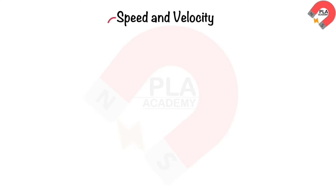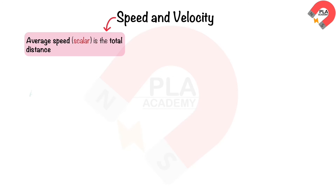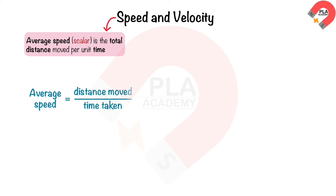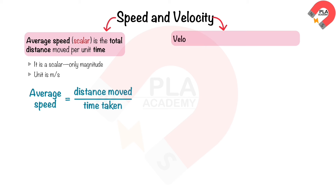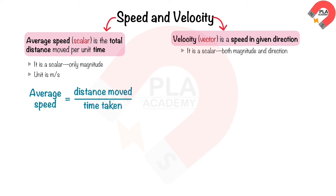Speed and velocity: average speed is the total distance moved per unit time. Speed is a scalar quantity which has only magnitude. Its unit is meters per second. Velocity is speed in a given direction. Velocity is a vector quantity which has both magnitude and direction. The unit of velocity is the same as the unit of speed, which is meters per second.